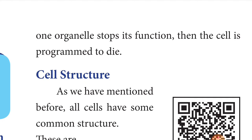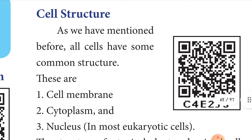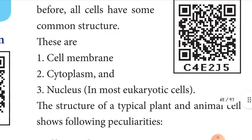Next, the important topic of cell structure. All cells have some common structures: cell membrane, cytoplasm, and nucleus. These are the three important structures of a typical plant and animal cell. The nucleus is present in most eukaryotic cells, not prokaryotic cells.